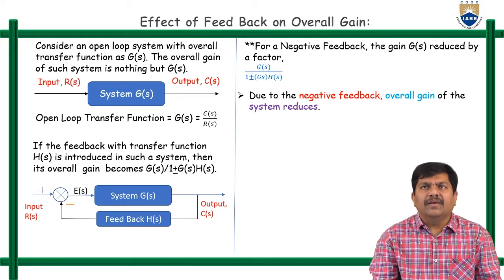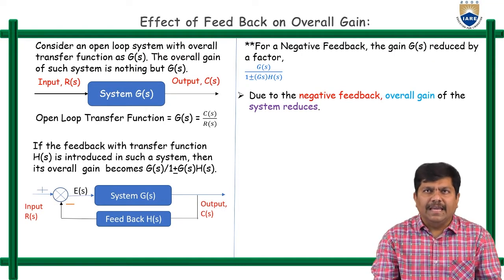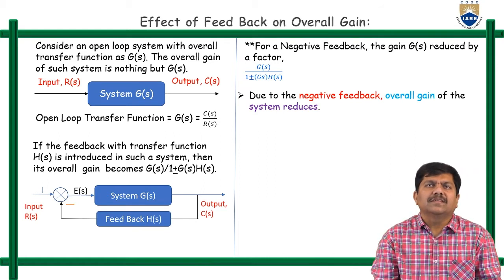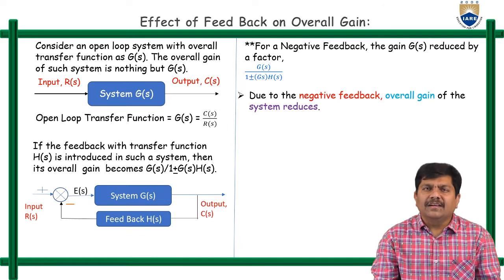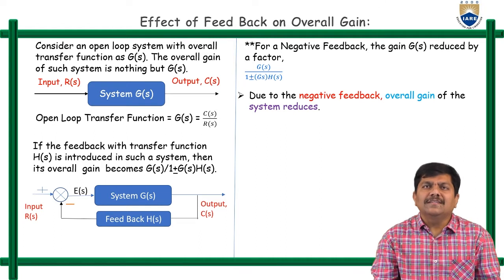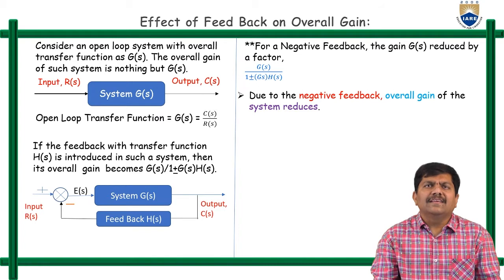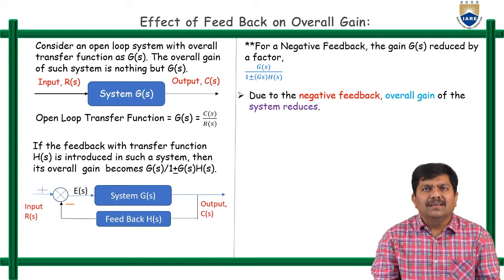The first one is the effect of feedback on overall gain. Let us consider an open loop control system first. In an open loop control system, let us examine the gain and analyze whether the gain is improving or reducing as we move from open loop to closed loop. The gain is nothing but the open loop transfer function: G(S) = C(S) / R(S).